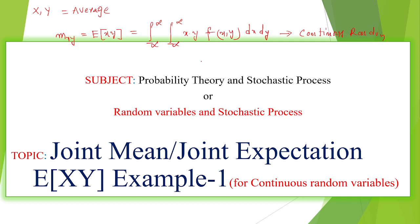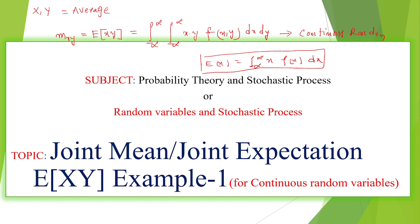For a single random variable, E(x) equals the single integral of x times f(x) dx. If there is only one company or single data, we can find the average as x times f(x) dx. This is also for continuous random variables.